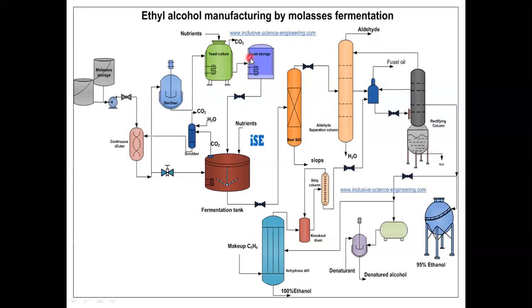From this yeast culture tank, it is sent to the yeast storage tank. Yeast which is present in this yeast storage tank are unicellular oval and having 0.004 to 0.010 mm in diameter. The pH of this adjusted yeast is 4.8 to 5 and the temperature is up to 32 degrees Celsius. From this yeast storage tank, it is sent to this fermentation tank.